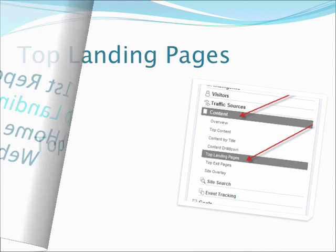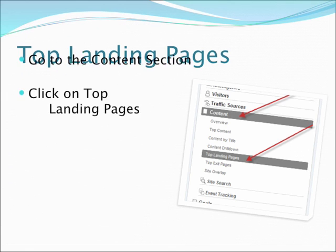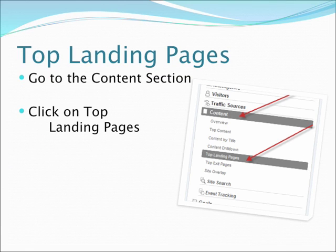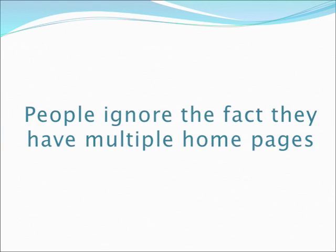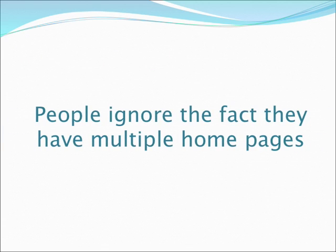The first thing you should do is go to the content section on the left-hand navigation and click on top landing pages. I love this report — I have a crush on this report — because what it shows is, I'm looking at an e-commerce website right now on my screen. What I'm looking at are the top 10 homepages of the website. Remember, you don't have just one homepage.